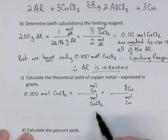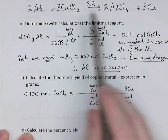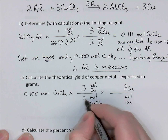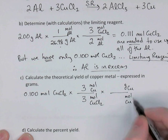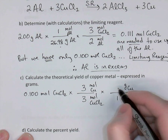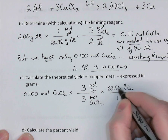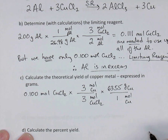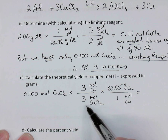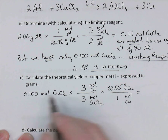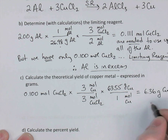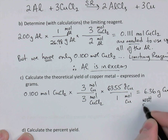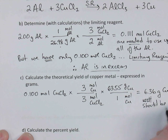Theoretical yield means how much should we expect to make theoretically — the answer to a stoichiometry problem. From the balanced equation it's a 3-to-3 ratio of copper chloride to copper, which simplifies to 1-to-1. Using copper's molar mass of 63.55 g/mol: 0.1 × 63.55 = 6.36 grams of copper should be produced. That is our theoretical yield.